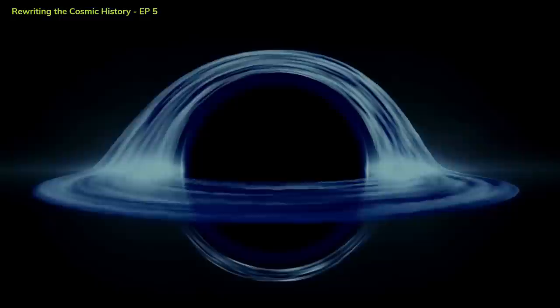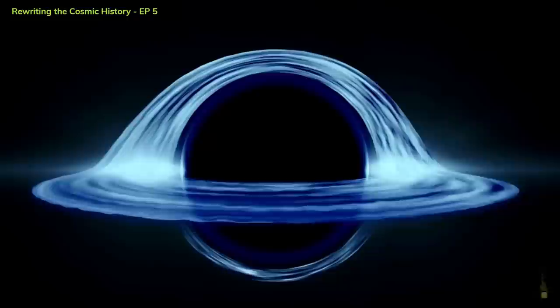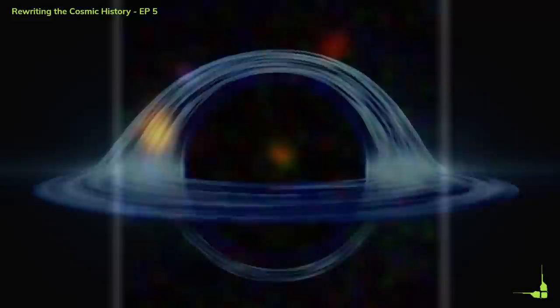To test these hypotheses and learn more about this supermassive black hole and its host galaxy, astronomers plan to use James Webb and other telescopes to observe them in more detail. They hope to measure the mass, spin, and accretion rate of the black hole, as well as the properties of the gas and stars around it.